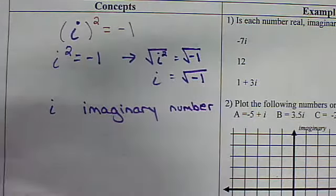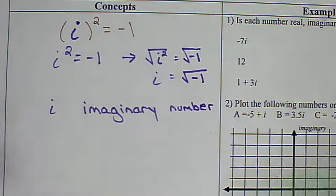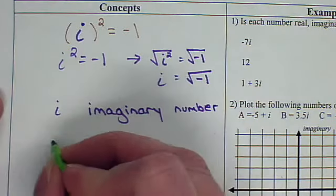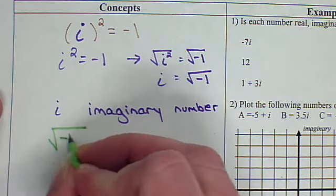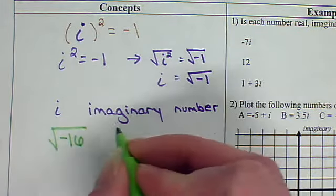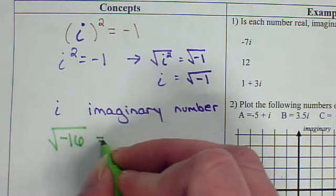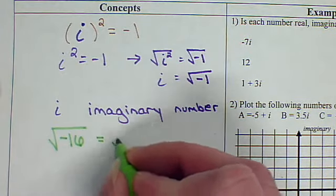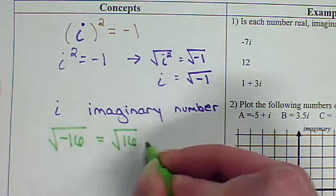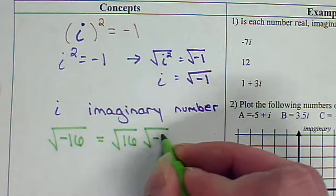Now, we invented it so that we could do things like take the square root of negative 16. So now, square root of negative 16. Well, I know from my rules that I could rewrite that as the square root of 16 times the square root of negative 1.